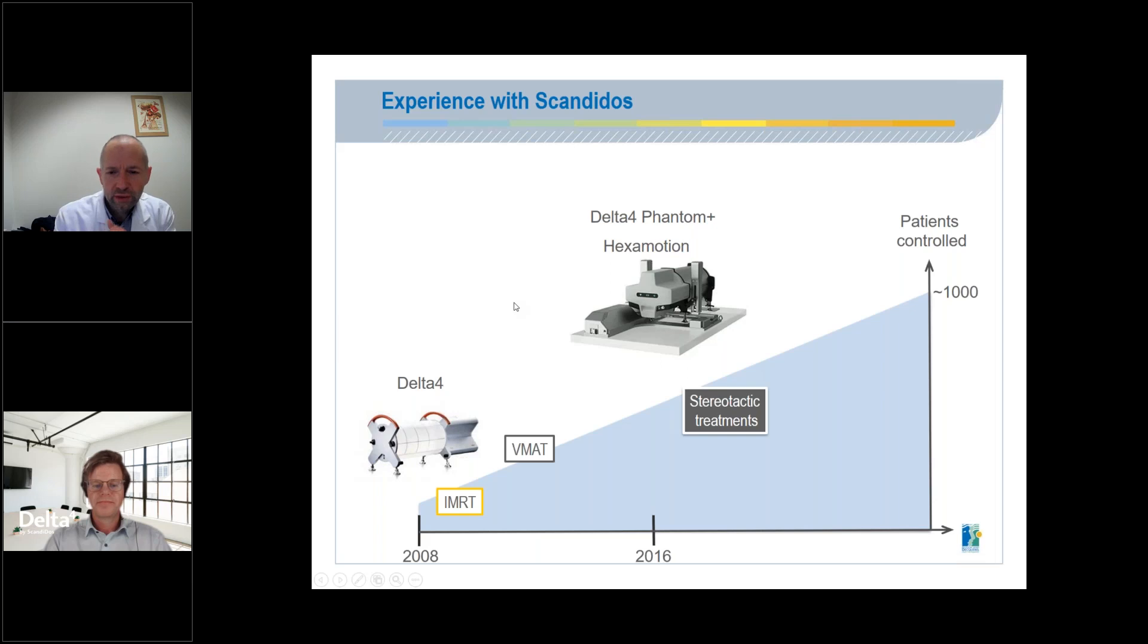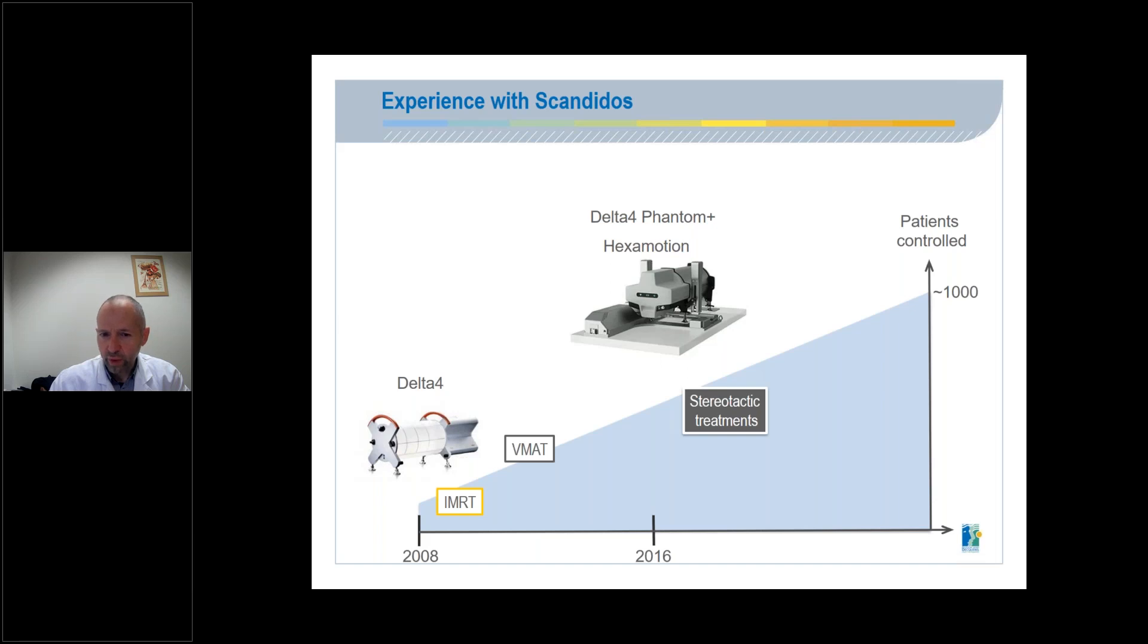What is our experience with Scandidos? In 2008, we bought the first Delta IV in order to control IMRT and VMAT treatments in our departments. In 2016, we replaced Delta IV with a new version, the Delta IV Phantom Plus. Compared to the old Phantom, this new Phantom is easier to use because it is wireless and the calibration procedure is simplified.